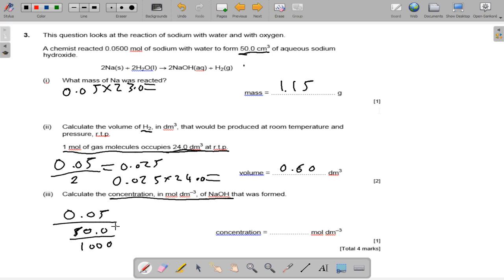Convert it back to decimeter cubed, and that is 1.00 moles per decimeter cubed. That's on the answer line. And next question.